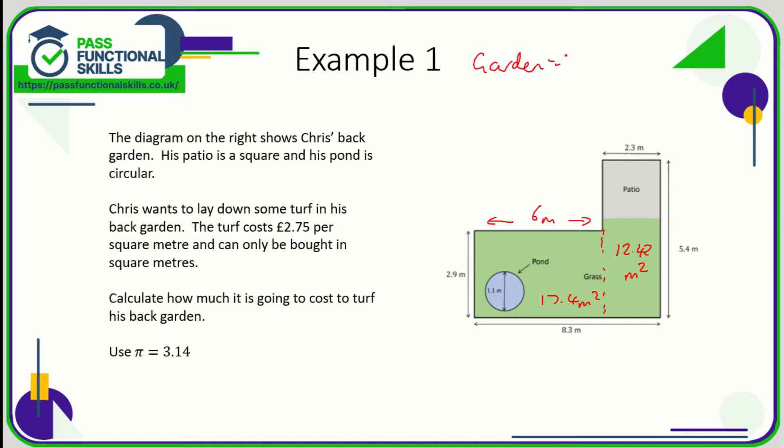Now I'm going to subtract the area of the patio and the area of the pond. Now we've been told that the patio is a square, so it's going to be 2.3 times 2.3, so the area of the patio is 5.29 square meters.